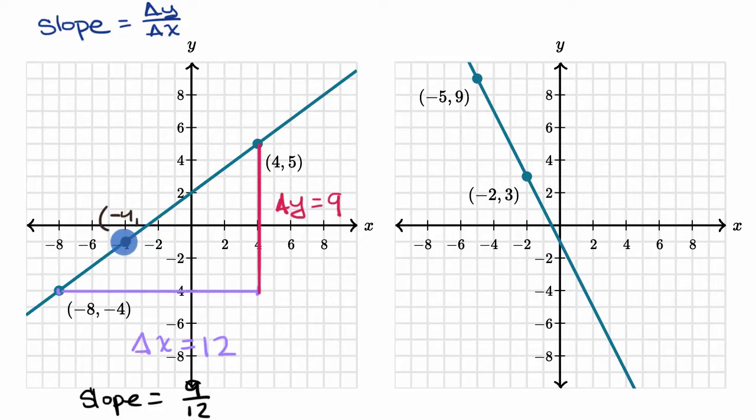and then y is negative one there. And then let me pick another point that clearly seems to be on the line. So let's see this one right over here. This is the point x equals zero, and y is equal to two.